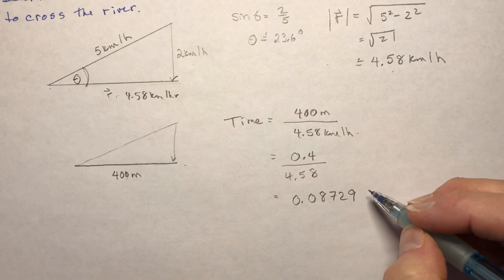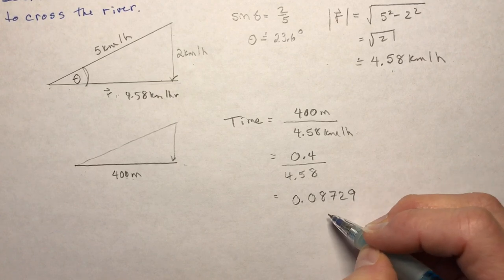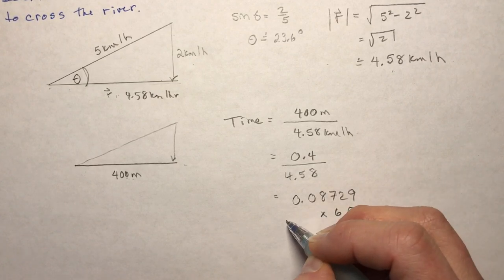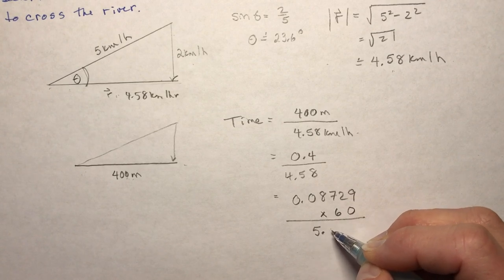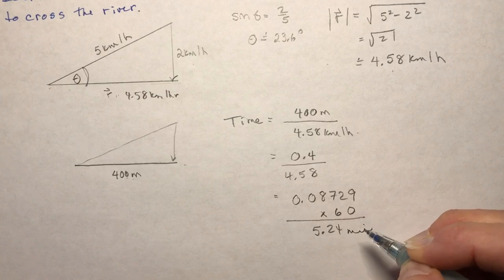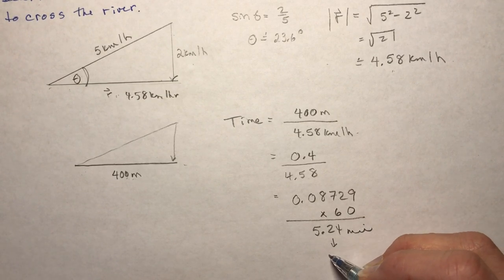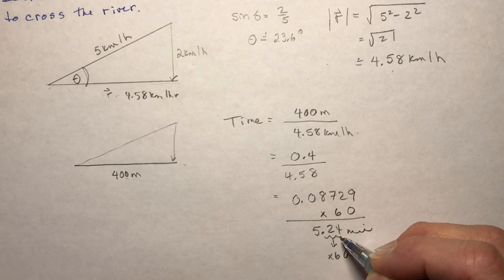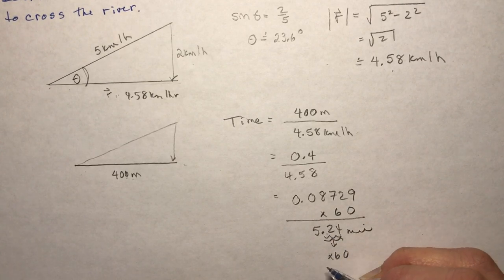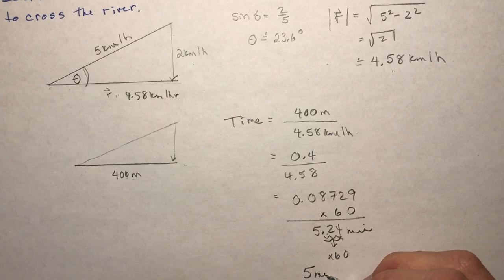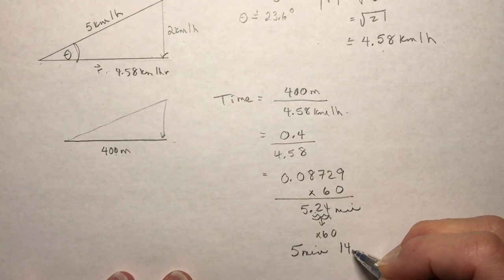And that's going to give you, I get in hours, I get 0.08729, something like that. I always leave all the numbers in my calculator that I have. And then you multiply that by 60 to get the minutes. So it comes up to 5.24 minutes. And you would multiply this by 60, just this part of it, just the fraction of the minutes to give you the seconds. So I get 5 minutes, 14 seconds.